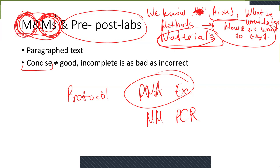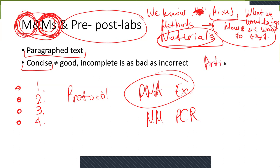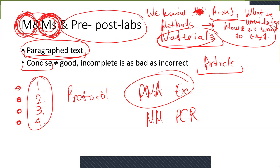What we ask you to do in materials and methods is show it in paragraph text. Please don't make it bullet pointed or as an ordered list. There is no need for that because it takes a lot of space. When you start writing articles, you will understand how crucial it is to keep everything concise and simple. This paragraph text is the best way to reduce the number of pages. If I see an article with an ordered list for materials and methods, I understand that this person did not work well at writing their articles.